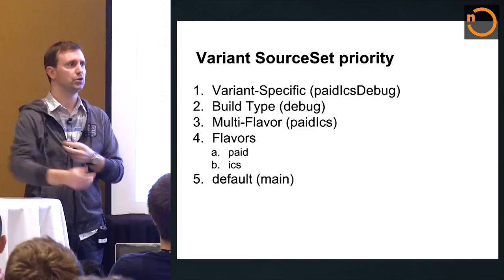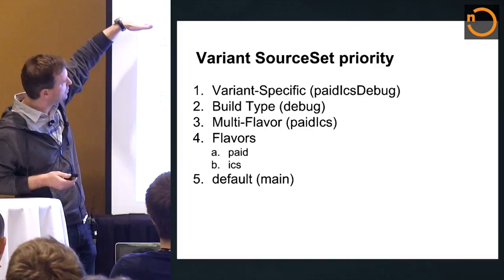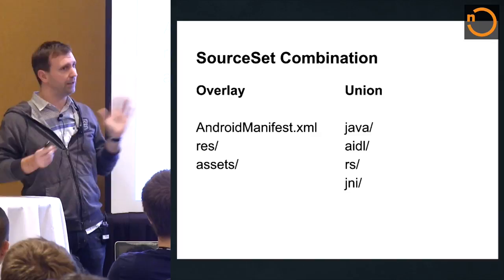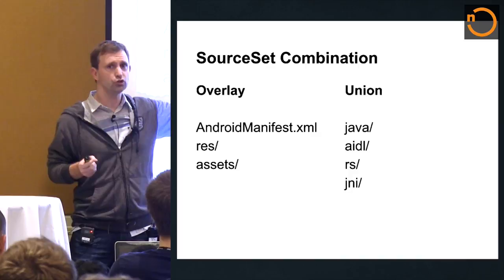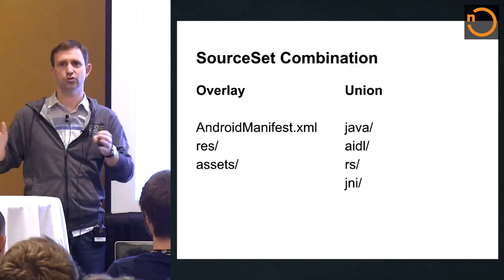We have some new priorities for these source sets. Number one highest priority is the variant-specific one, as that's the most specific. Then multi-flavor, then the flavors, then the default. They're combined using two different strategies: on the Java side, it's a union — if you have source code in src/main/java and src/debug/java, it's just two source folders sent as one set of sources to the compile task. For Android resources and assets, we do merging, which allows overlays — if you want to override resources in your debug version, put a resource there and it overlays src/main/res.